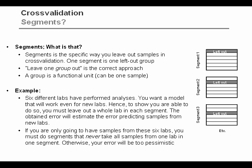What are we doing when we do cross-validation? We are simulating that we have new samples. Imagine we have a dataset where six different labs have performed the analysis — several samples from each lab. Now we want to build a calibration model, and maybe we want to show that this model will also work when we get data from a new lab that was not included in the calibration. I can test that with cross-validation, by leaving out all the samples from lab one, building a calibration model, and fitting the data of lab one.